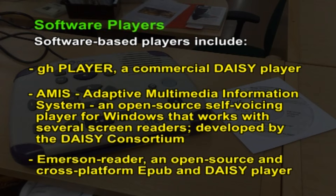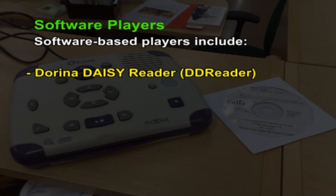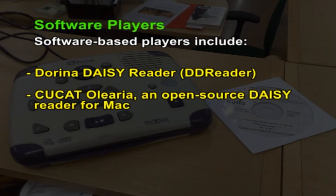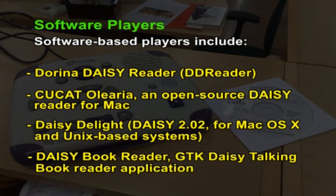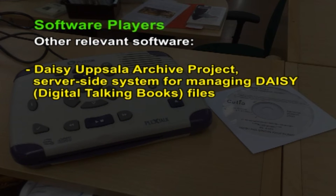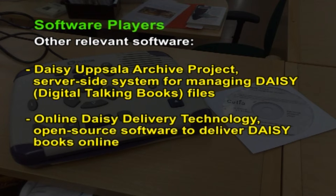Other software players include Immersion Reader, an open source cross-platform EPUB and DAISY player; Doreena DAISY Reader or DD Reader; CUCAT; Euleria, an open source DAISY reader for Mac; DAISY Delight for Mac and Unix-based systems; DAISY Book Reader; and GTK DAISY Talking Book Reader application. Other relevant software includes DAISY Archive Project, a server-side system for managing DAISY files; and Online DAISY Delivery Technology, open source software to deliver DAISY books online.